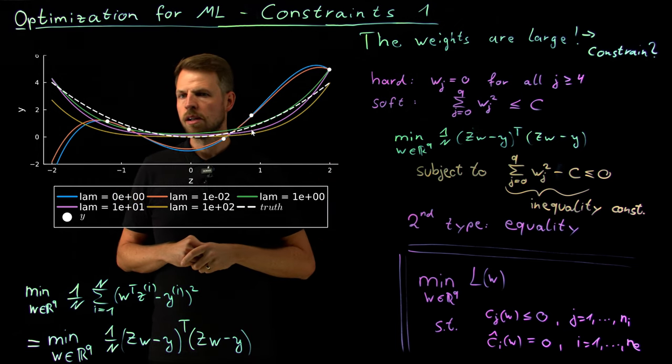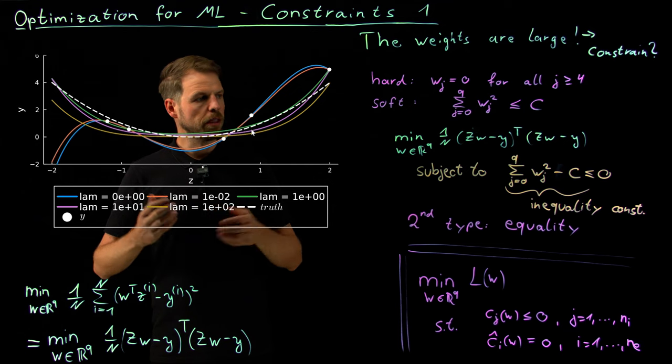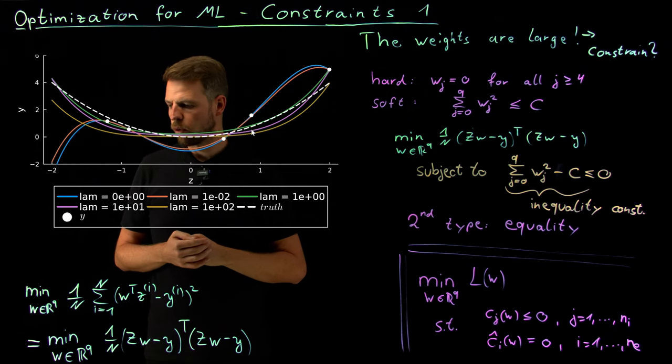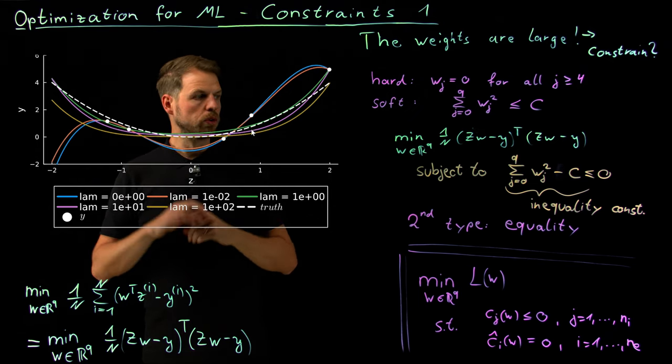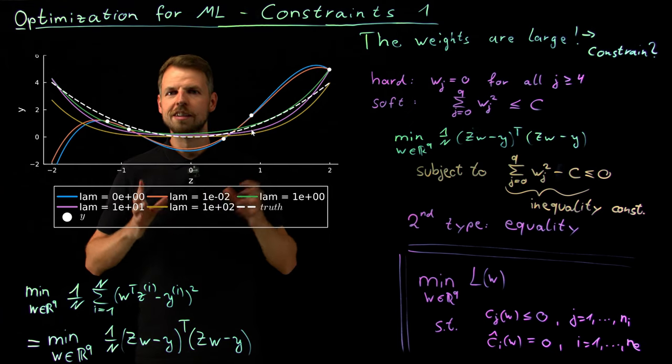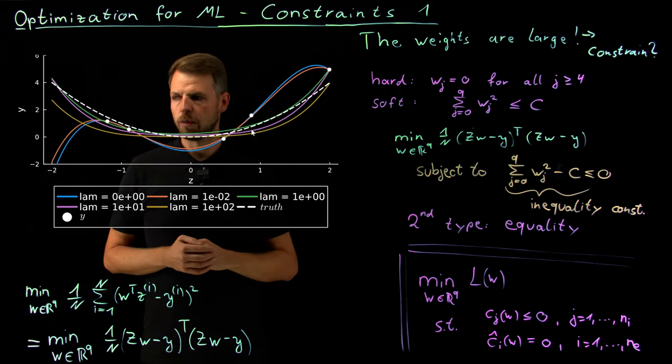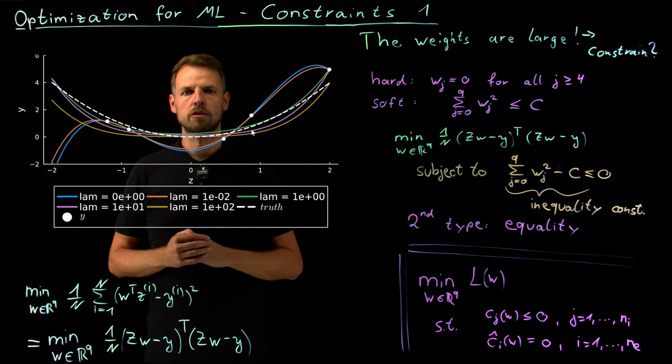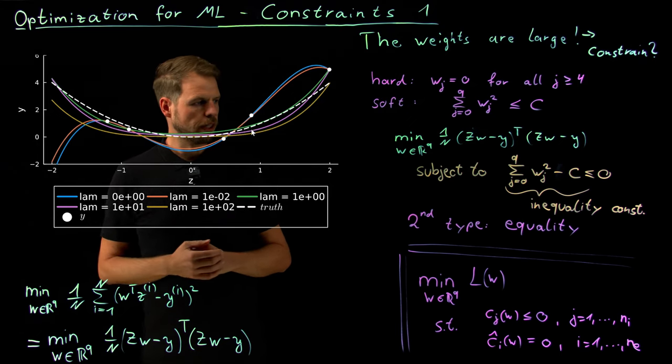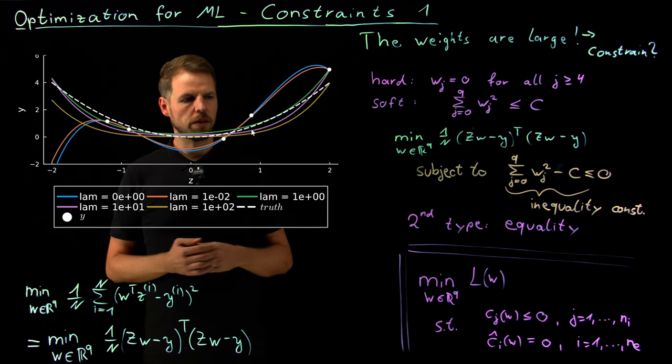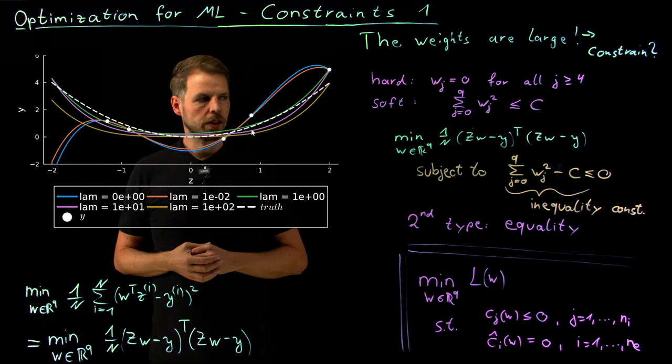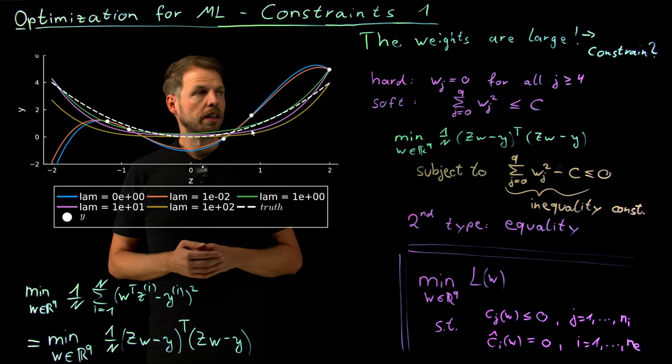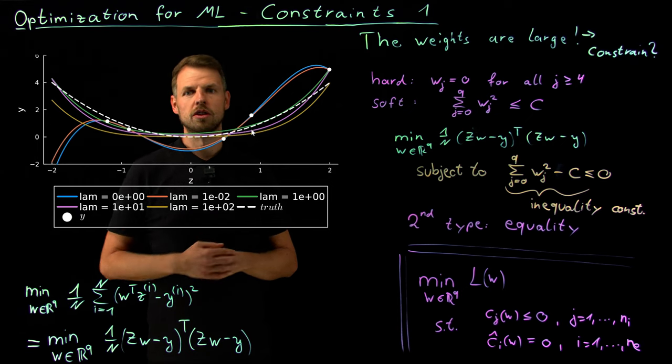We're going to study what it means for a solution to be optimal in the constraint case, and then also how is it solved in practice. We're not going to go into all the dirty details. Again, you can look at the brilliant book by Nocedal and Wright for this. But we are going to get a pretty good idea of how these problems can be solved. And this will help us greatly in the next chapters when we will talk about constrained optimization, physics-informed learning, and topics like this where these constraints really play an important role. And with this, I would like to thank you for your attention and see you in part number two on constraints.